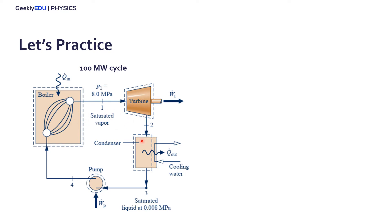We have this simple Rankine cycle here. We know the pressure and quality of the vapor in the inlet of the turbine. We know also the quality and the pressure on the outlet of the condenser. And it's a hundred megawatt cycle.